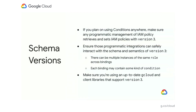In reality, this is pretty simple. For existing and future programmatic integrations that need to read or write IAM policies, just ensure they understand the syntax and semantics associated with the version 3 schema. Namely, this means your code should understand that there can be multiple instances of the same role across bindings in a given policy, and that some of those bindings may include a condition. So as long as this is the case, you can always request version 3 on get IAM policy and set version 3 on set IAM policy.